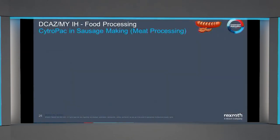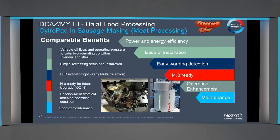The benefits of Cytropack as a replacement for the old system: it provides variable oil flow and variable pressure for the two operations. The LED technology is very useful for the customer and helps with maintenance — they don't need to open the cabinet; they can look at the LED light for early diagnosis of the HPU. This is also an Industry 4.0-ready HPU, enabling future developments for condition monitoring of the system.